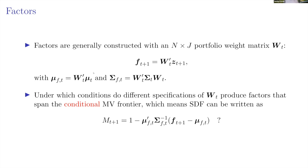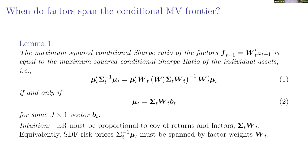We compute means and covariances of the factors and then construct the SDF or MV portfolio using the factors. The first question is: when is the SDF constructed from factors the same as the SDF from the original stock returns? The necessary and sufficient condition is that the maximum squared Sharpe ratio from the factor SDF equals the maximum squared Sharpe ratio from the individual stock SDF — mu-prime sigma-inverse mu for stocks versus the factors.